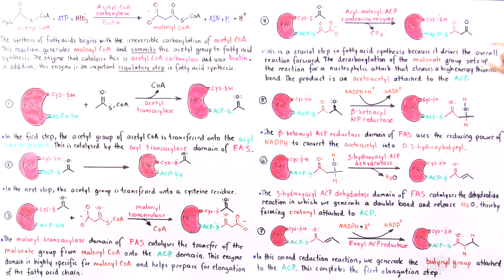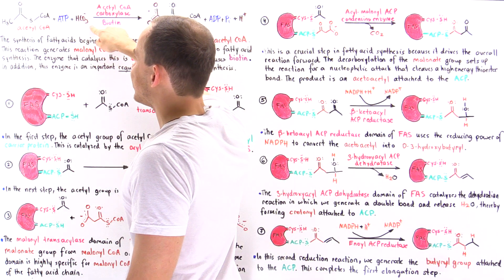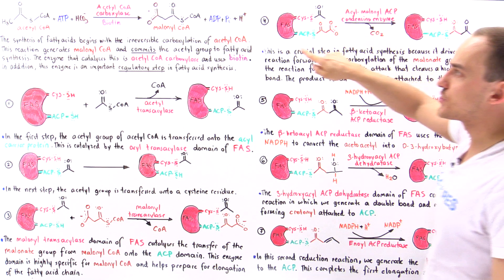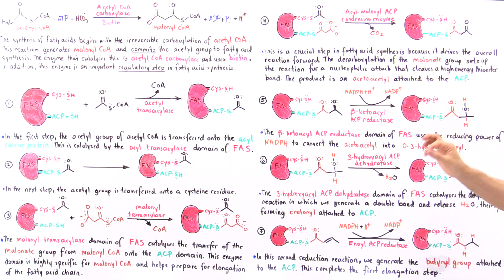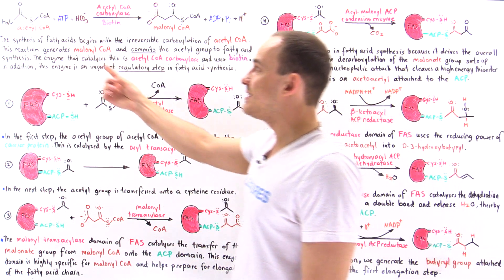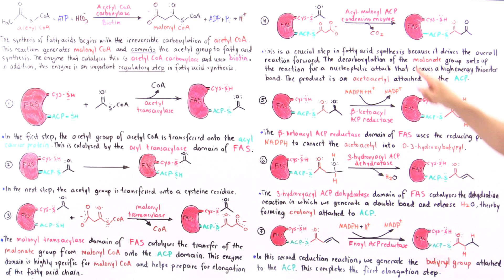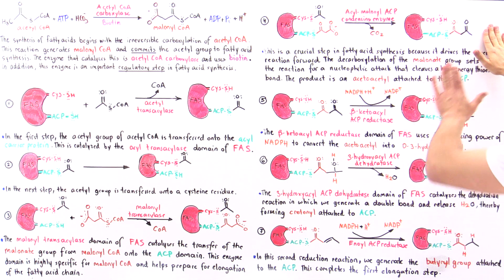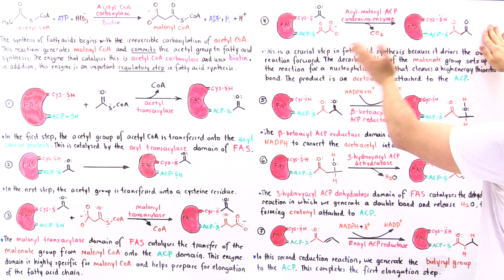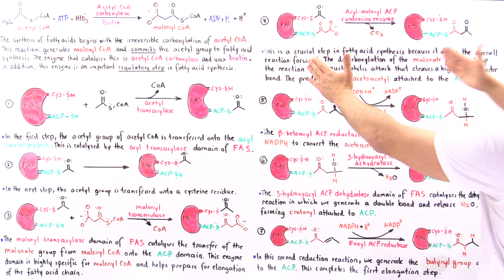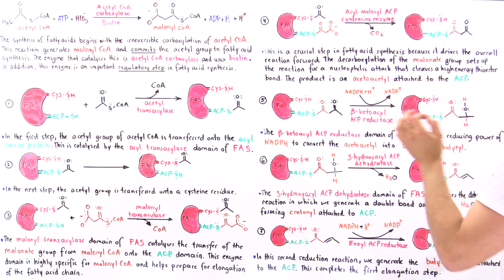This condensation step also reveals that the carbon dioxide used earlier to carboxylate acetyl coenzyme A is now removed in the decarboxylation. This means all the carbon atoms found in the fatty acid chain come from acetyl coenzyme A — not from carbon dioxide. It is the indirect action of ATP in the earlier carboxylation that sets up this decarboxylation, ultimately driving the condensation reaction forward.